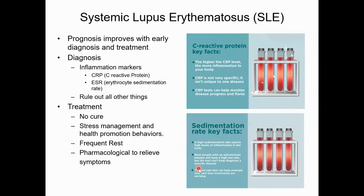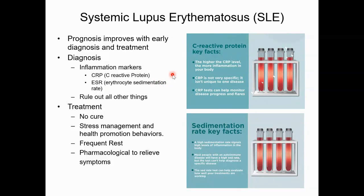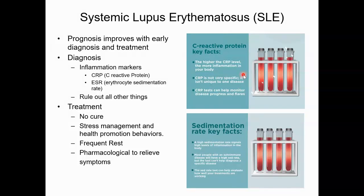For diagnosis, inflammatory markers are not specific to lupus — they just signify inflammation and help rule other things out. The CRP, or C-reactive protein, is released in the blood within a couple hours after tissue injury and is an inflammation marker. The higher the CRP level, the more inflammation in the body. CRP is not specific to one disease; it just signifies inflammation, and CRP tests can help monitor disease progress and flares.